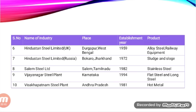Salem Steel Limited in Tamil Nadu was started in 1982 and produces stainless steel products. Vijayanagar Steel Plant in Karnataka, started in 1994, produces flat steel and long steel. Visakhapatnam Steel Plant in Andhra Pradesh, started in 1981, produces hot metal. These public sector plants were collaborated with foreign countries — Russia, UK, and Germany — for technical assistance, financial assistance, or labor.